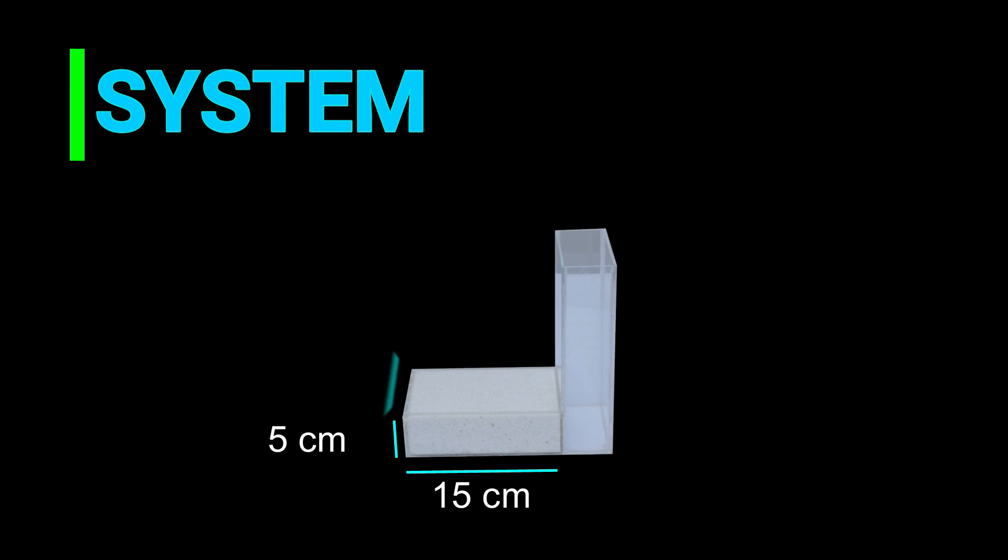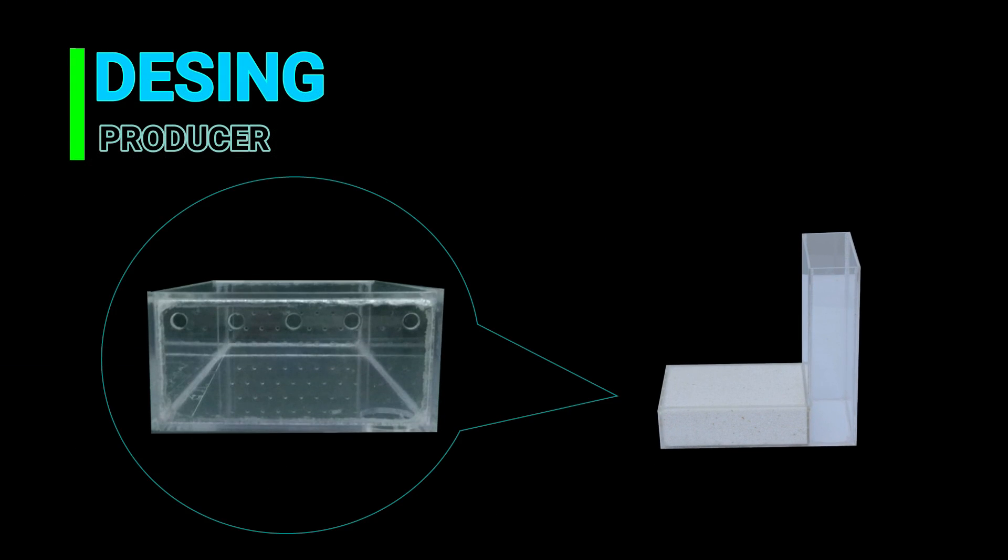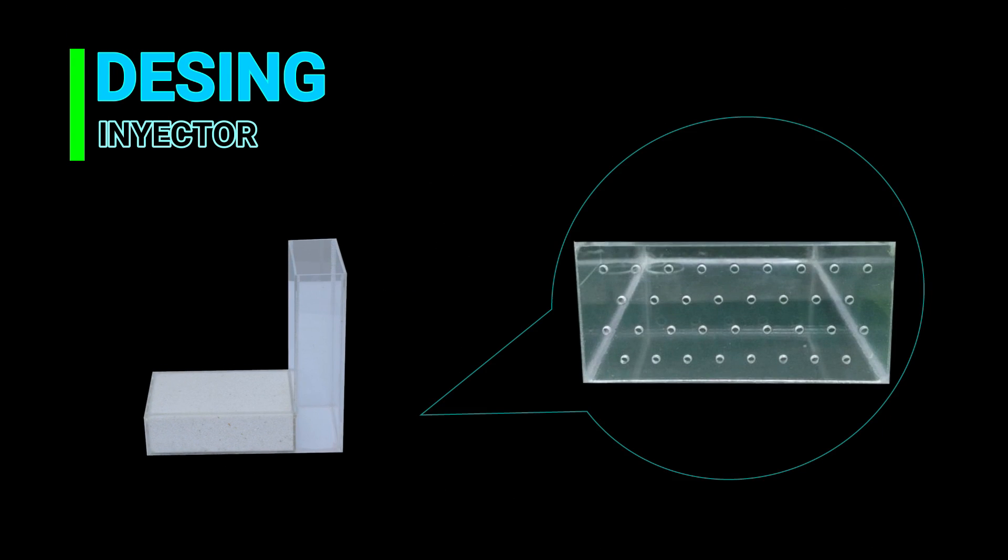The injection production system has a sand chamber and a fluid chamber. One of the phases has five production holes in the upper part. The other one has 34 injection holes. The system base has a hole whereby sand is introduced.